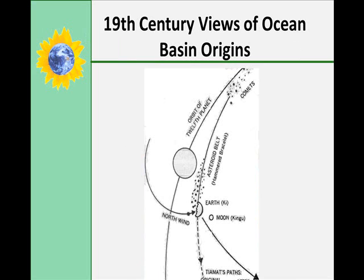The Pacific Ocean Basin formed when the moon was ripped away from the earth. The size of the Pacific Ocean Basin is just larger than the diameter of the moon. Vertical tectonics means that the surface of the earth goes up and down over long time intervals due to unknown processes acting deep in the earth. So again, this is what the 19th century folks believed.